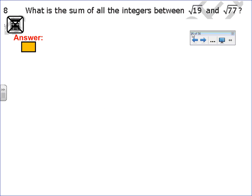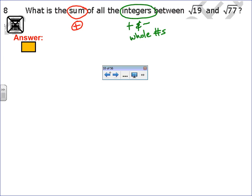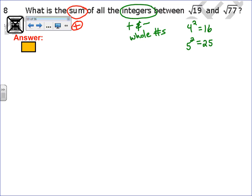Number 8, what is the sum of all the integers between √19 and √77? So a couple key words, sum means to add, what are integers? They are positive and negative whole numbers. Got to know that. Now, √19 and √77 are not perfect squares, so I need to estimate them. I know that 19 is going to be between 4 squared, which is 16, and 5 squared, which is 25.